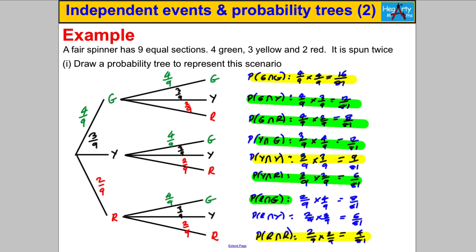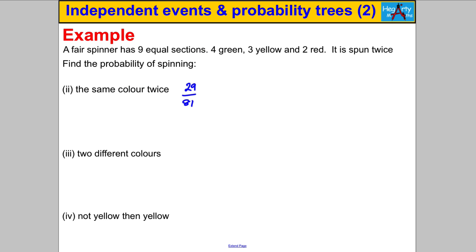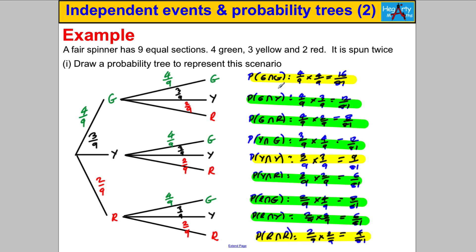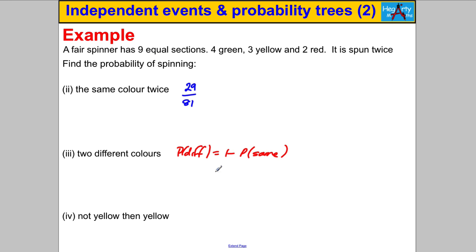For the probability of two different colors — you could add all those scenarios up, but an easier way is to use the complement. Either the colors are the same or they're different. Since we know the probability of the same color is 29 out of 81, the probability that they're different is one minus 29/81, which equals 52 out of 81.